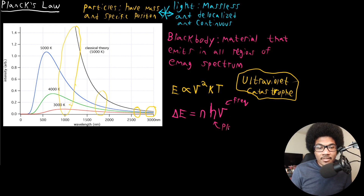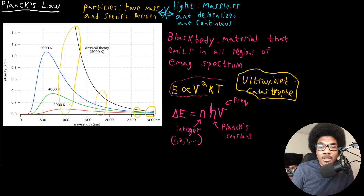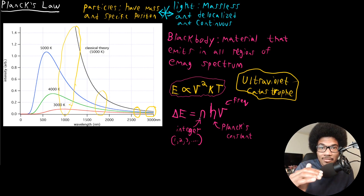H is Planck's constant, whose value I'll give you in just a second. And N — this is what makes this equation truly unique — N is just any integer: 1, 2, 3, and so on. So instead of counting all frequencies as classical mechanics does, regardless of whether it's an integer or non-integer value, with Planck's Law you're counting discrete values of energy and not counting everything.